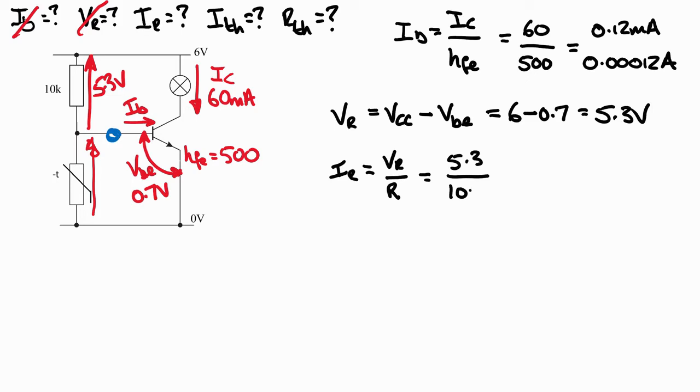Always remember to convert everything to standard units, so 10 times 10 to the 3 or 10,000. When we run that into the calculator, it's 0.00053 amps or 0.53 milliamps, and that's us now established another important value.